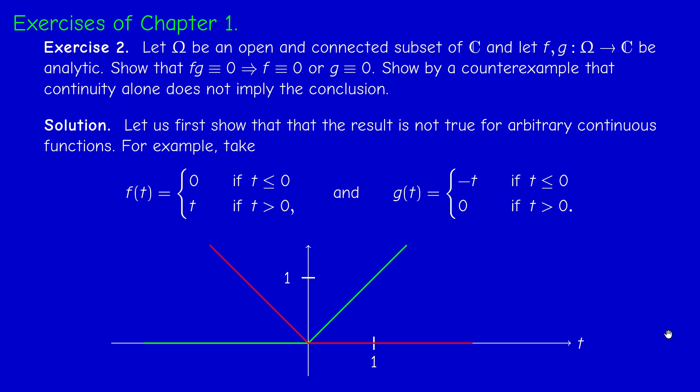So what do we have here? F times G is always zero, because if t is negative, zero times minus t is zero. If t is positive, t times zero is zero. So FG is identically zero. However, F is not identically zero, and G is not identically zero. So this is a counterexample.